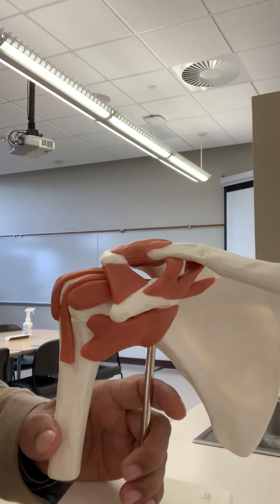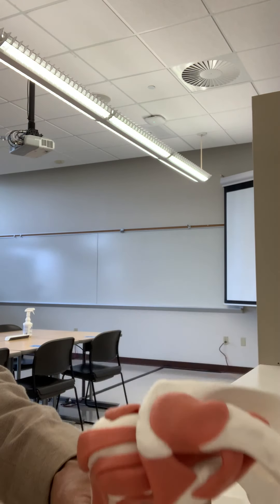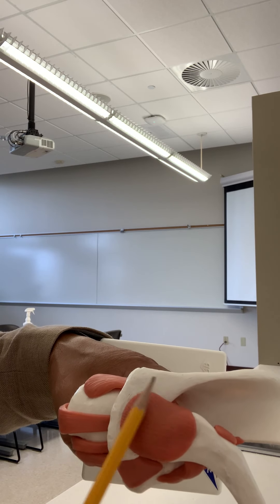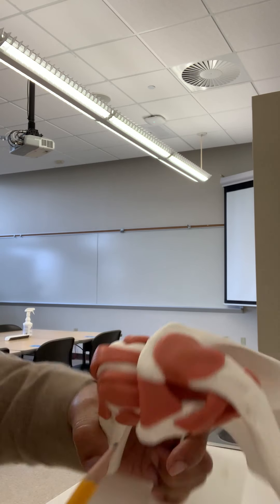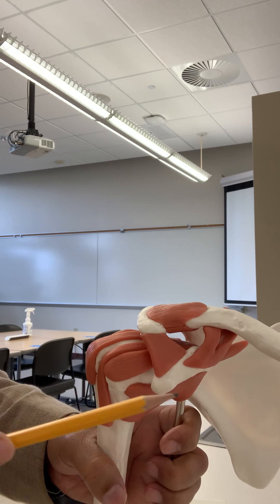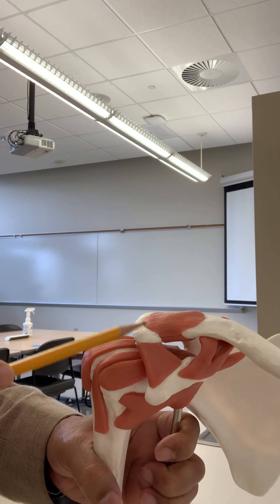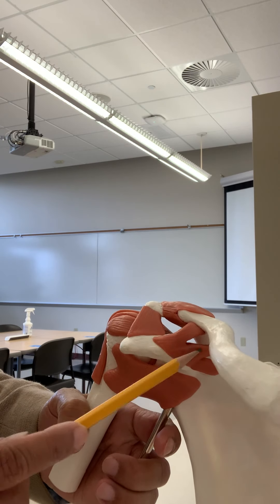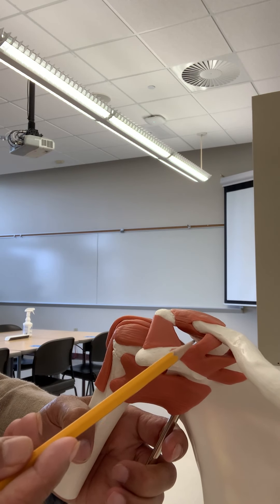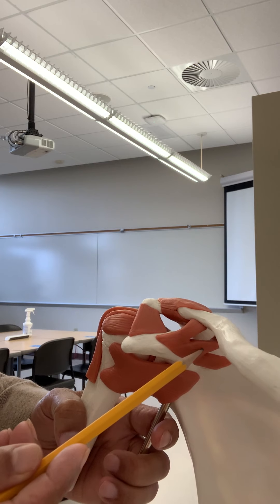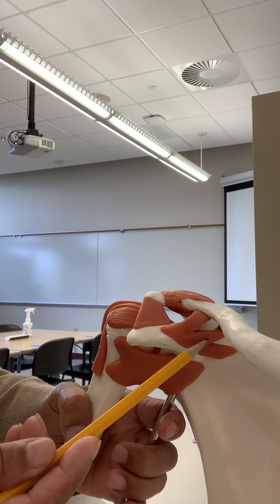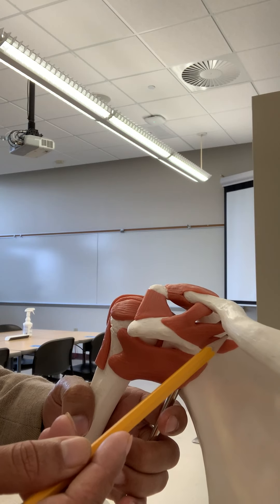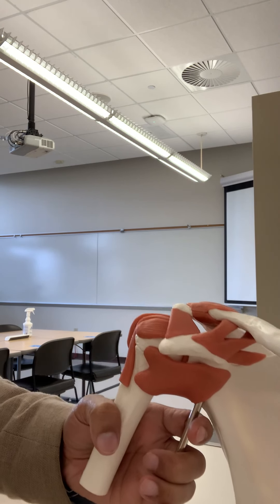Let me quickly go over again. At the top of the shoulder joint: this is the acromion and this is the clavicle, so the acromioclavicular ligament. This one connecting the coracoid process and acromion is the coracoacromial ligament. These two are the coracoclavicular ligaments — external and internal. This one above the scapula is the superior transverse scapular ligament.